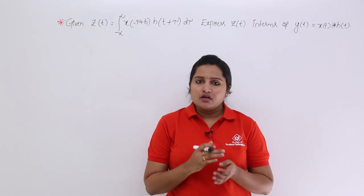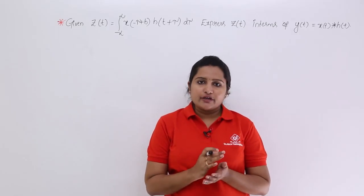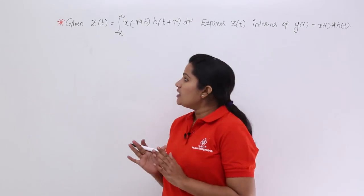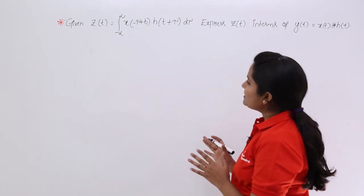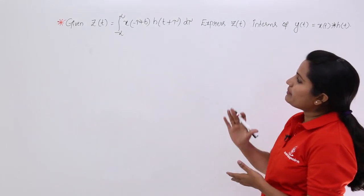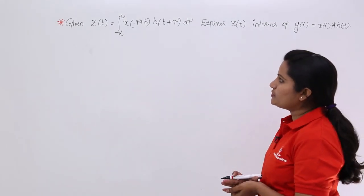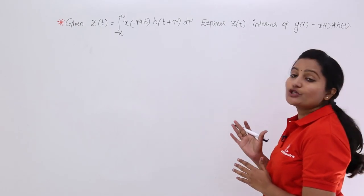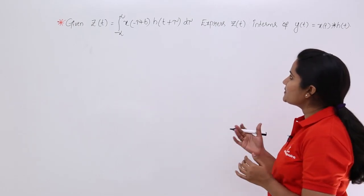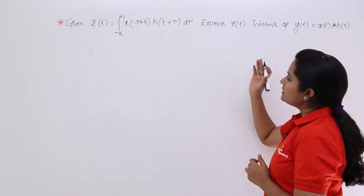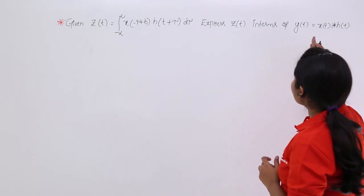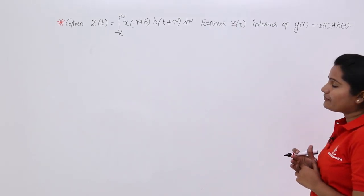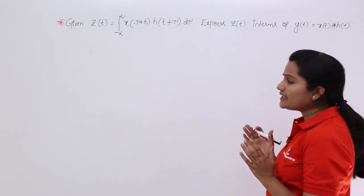In this video, we are going to discuss a problem related to convolution. Given Z of t is equal to the integral from minus infinity to infinity of X of minus tau plus B, H of t plus tau, d tau — express this Z of t in terms of Y of t, where Y of t is equal to X of t convolution with H of t.